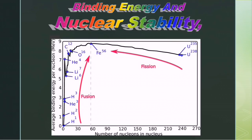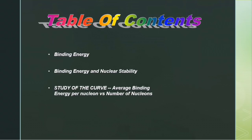Welcome to my channel SS Academy. Today we will study binding energy and nuclear stability. Table of contents: binding energy, binding energy and nuclear stability, and we will also study a curve for average binding energy per nucleon versus number of nucleons. We will see how nuclear stability is related to binding energy and that fission and fusion processes tend to increase the binding energy of the particles involved.